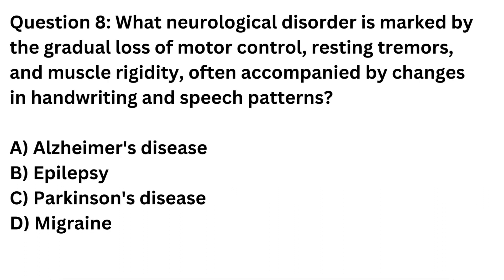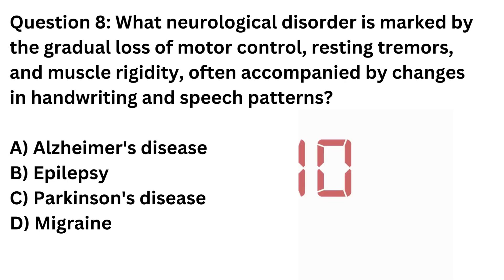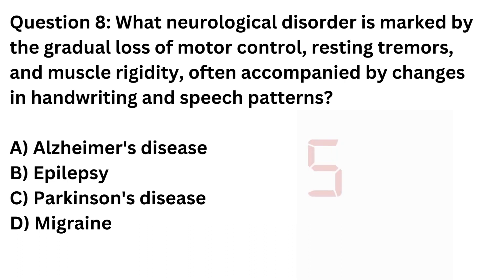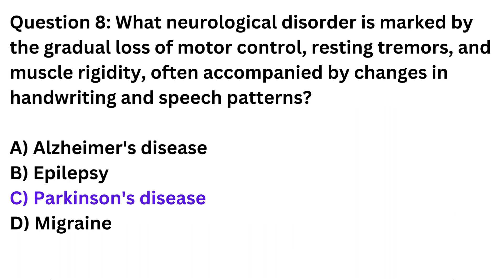Question 8. What neurological disorder is marked by the gradual loss of motor control, resting tremors, and muscle rigidity, often accompanied by changes in handwriting and speech patterns? a. Alzheimer's disease. b. Epilepsy. c. Parkinson's disease. d. Migraine. Correct answer: c. Parkinson's disease.